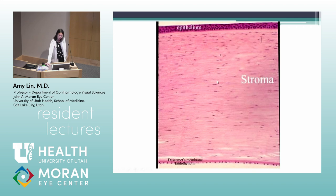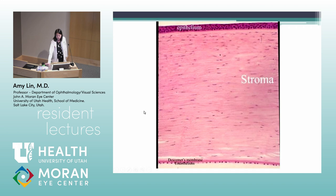In cross-section, the epithelium has about four to five cell layers of stratified squamous epithelium held together by tight junctions, with a basement membrane beneath it. There's an unlabeled structure called Bowman's layer — an acellular structure, sometimes called Bowman's membrane, but it's not a true membrane. The bulk of the cornea is the stroma, containing keratocytes arranged to maintain transparency. The endothelium has an endothelial cell pump that removes fluid to keep the cornea clear, and its basement membrane is Descemet's membrane, which is a true basement membrane.